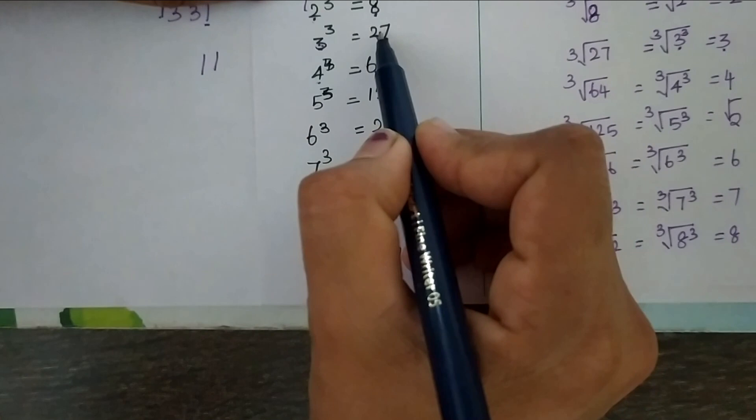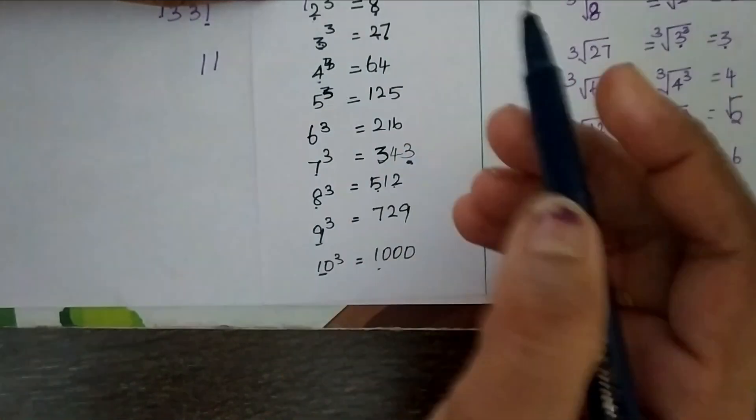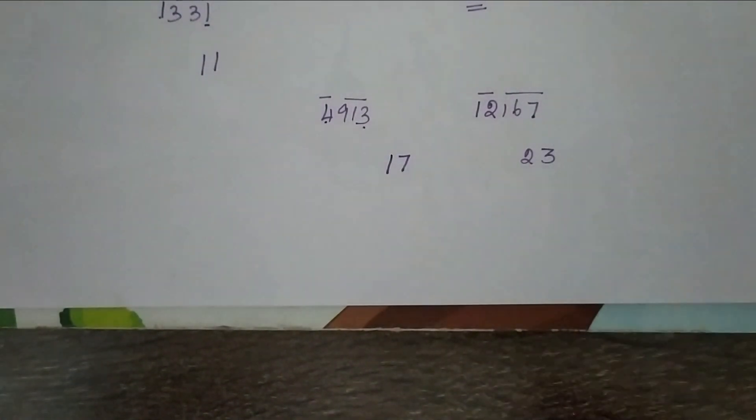Then we have number 12. 12 lies between 8 and 27. Among these two, 2 is the smallest number. So, 23 is the cube root of this number.